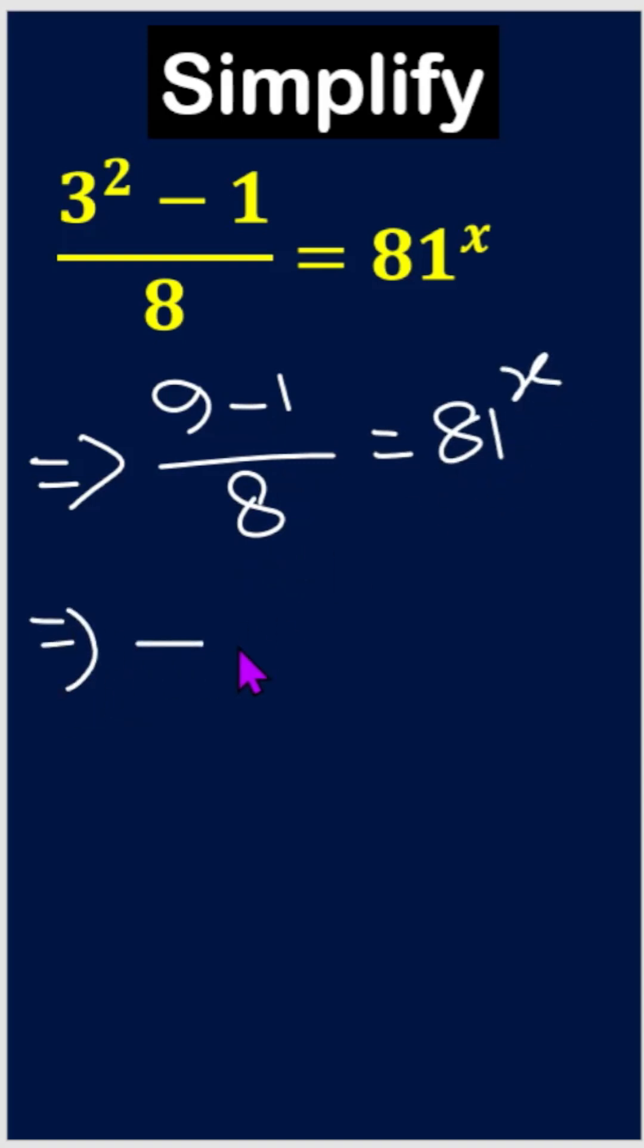Then 9 minus 1 means 8 divide 8 and here is 81 to the power x.